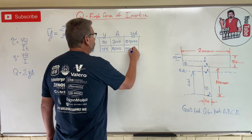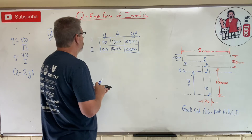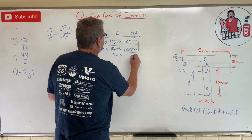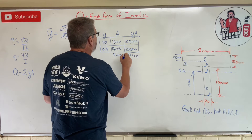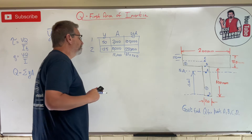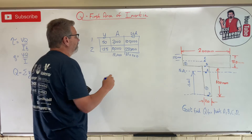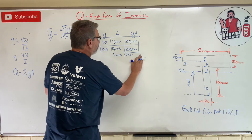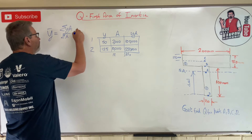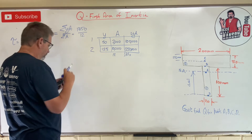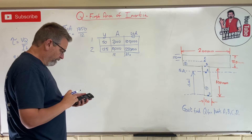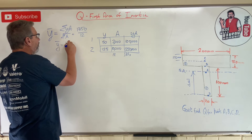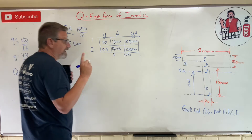So the sum of the areas is 12,000 and the sum of the y·A's is 1,350,000. Y-bar equals 1,350,000 divided by 12,000 — I can cancel three zeros from both — giving 1,350 divided by 12, which equals 112.5 millimeters. Now we know where the neutral axis is.